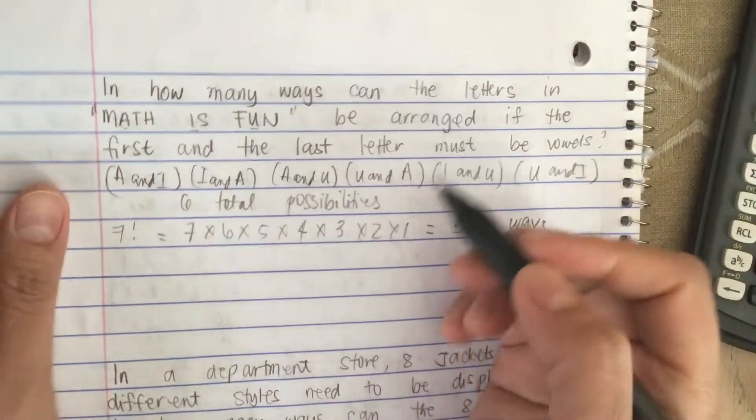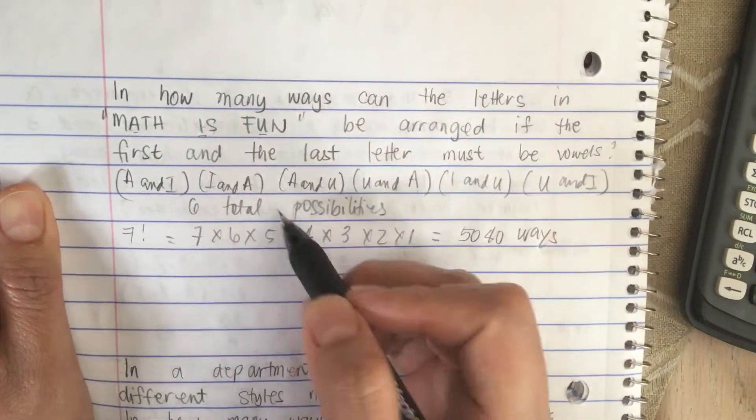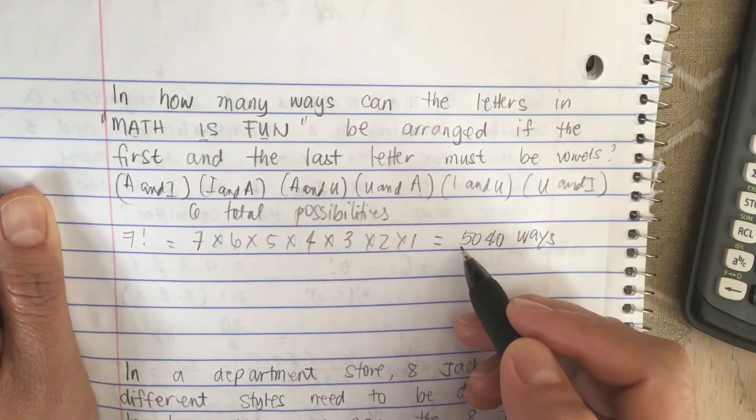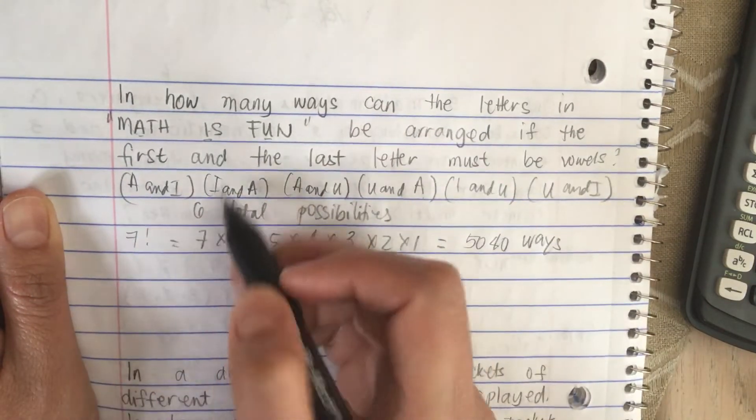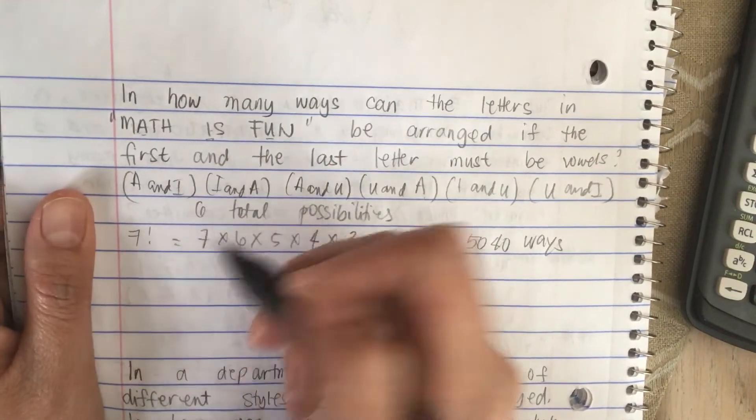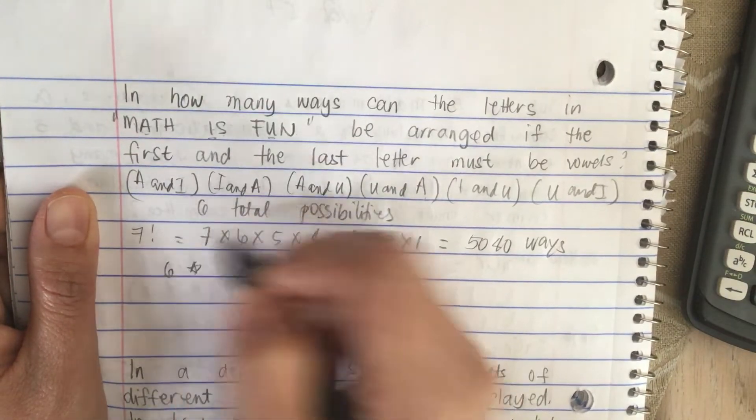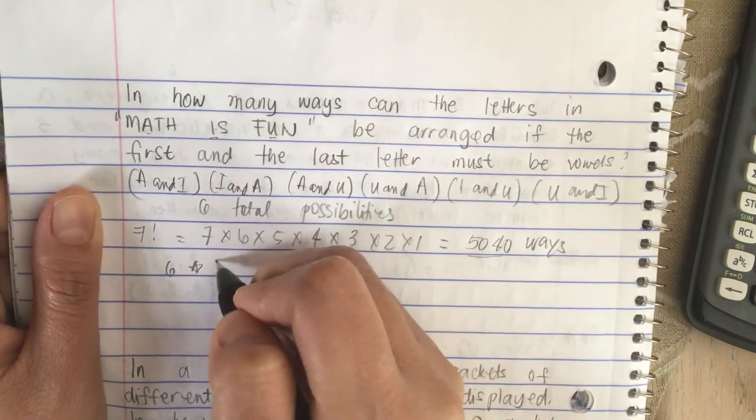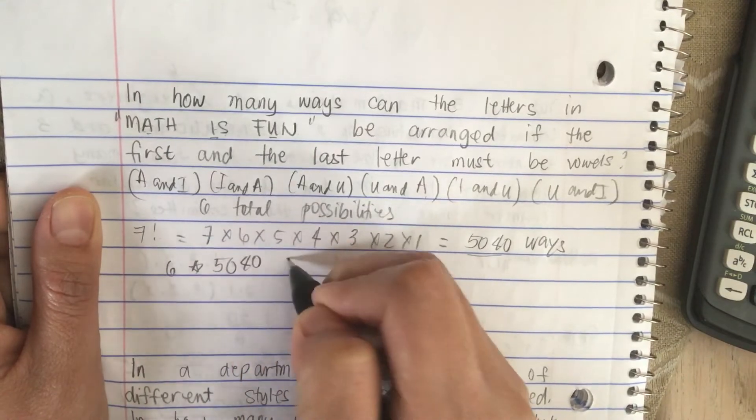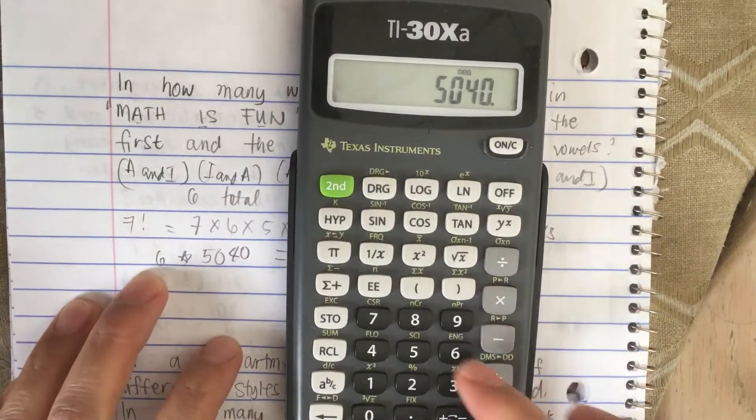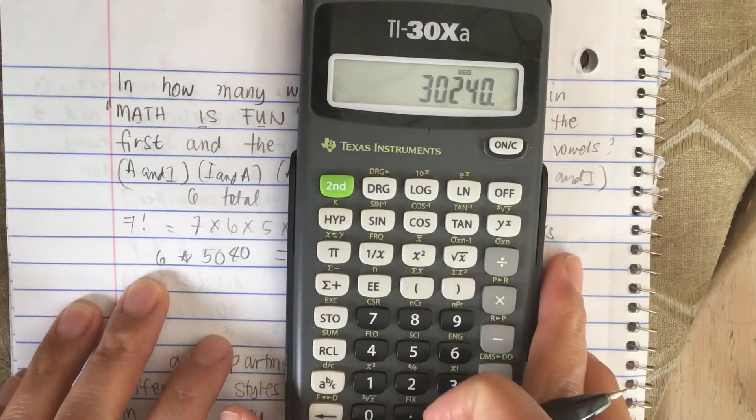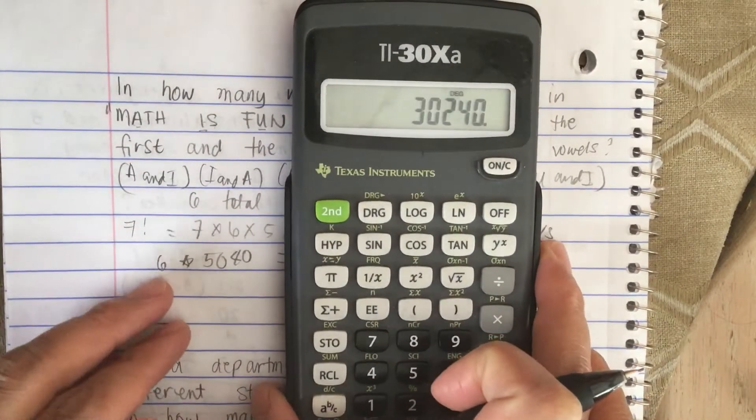So now the answer to this problem is we multiply six times five thousand forty. So we have six times seven factorial, which is five thousand forty. This is equal to thirty thousand two hundred forty ways.